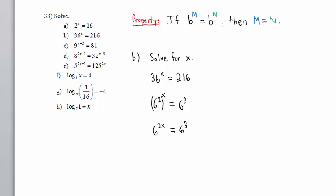We have now arrived at the situation where we have the exact same base on each side of the equal sign. Therefore, it follows that these two exponents must be the same. 2x must equal 3. Dividing both sides by 2, we get x equals 3 halves, and that is the solution.